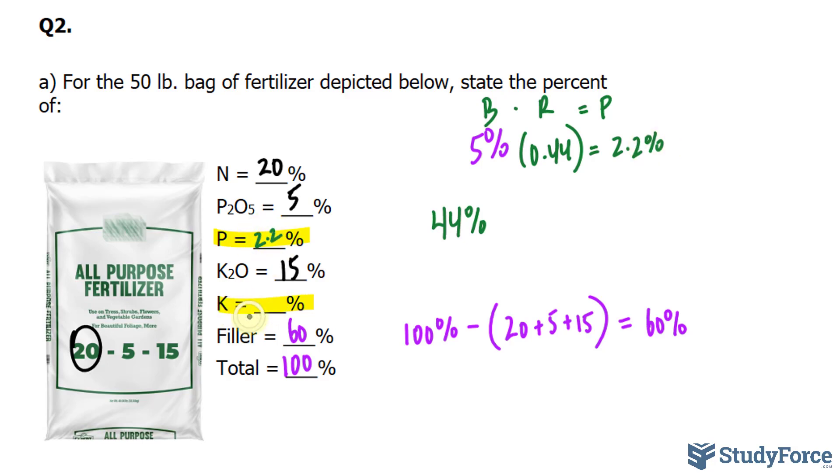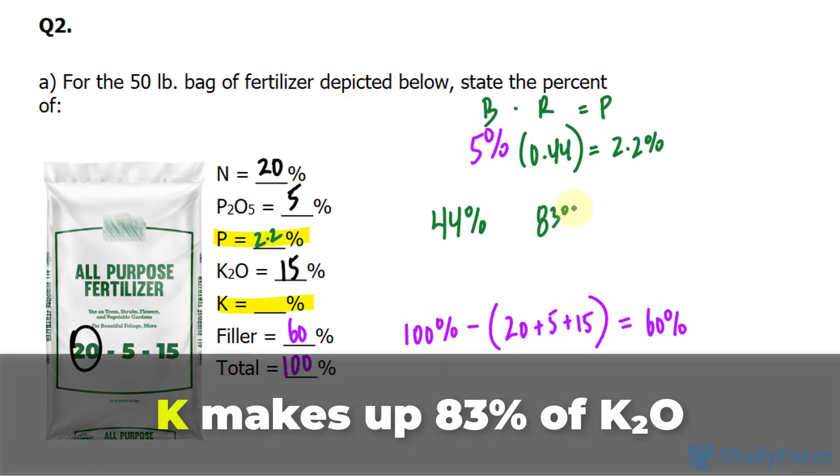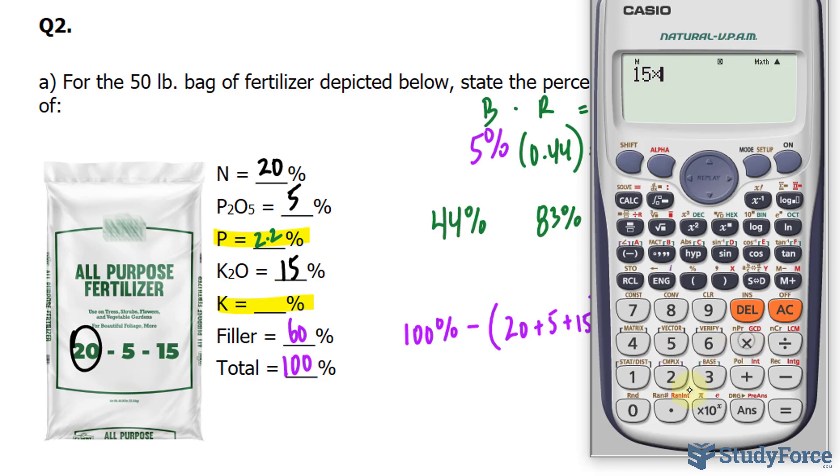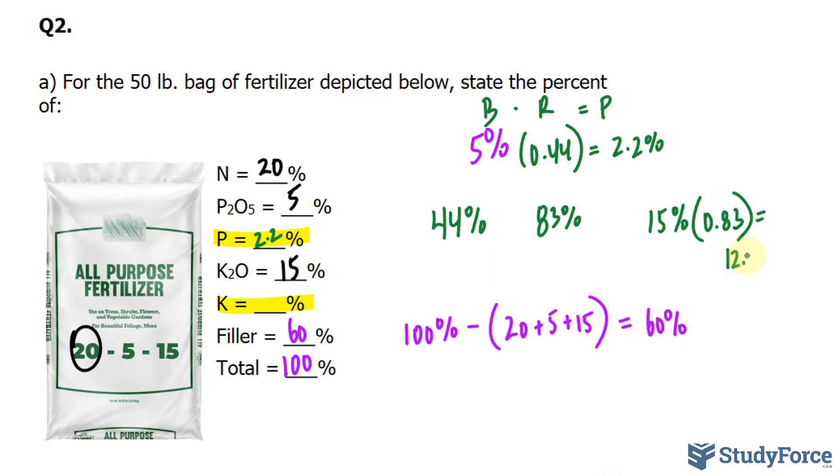Now for potassium, we use a different percentage, we use 83%, as discussed earlier. So we'll take 15% and multiply it by 0.83. This should give us the portion of that 15% that is only K. So I'll take 15 times 0.83, and we end up with 12.45%. 12.45% of the entire package of this formulation is potassium.